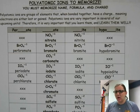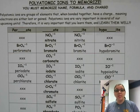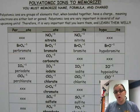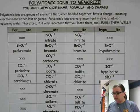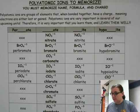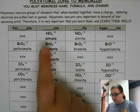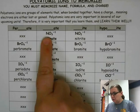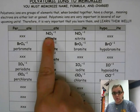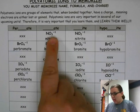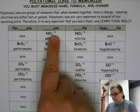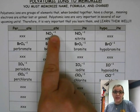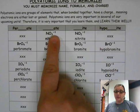Polyatomic ions are ions where we have several elements together that have either lost or gained some electrons, and so they have a charge. You can see some of the ones that we're going to make you memorize here on this list, and you can see that it's got two different symbols, two different elements. Some of the elements have a subscript with it, and then we have a charge — for example, here with a negative charge that we've gained some electrons.